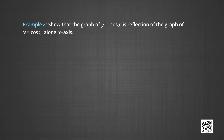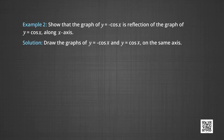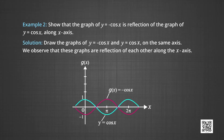In example 2, we will show that the graph of y = minus cos x is a reflection of the graph of y = cos x along the x-axis. We draw the graphs of y = minus cos x and y = cos x on the same axis. The pink line represents the graph of minus cos x, and the blue line represents the graph of y = cos x. We observe that one is the reflection of the other in the x-axis.